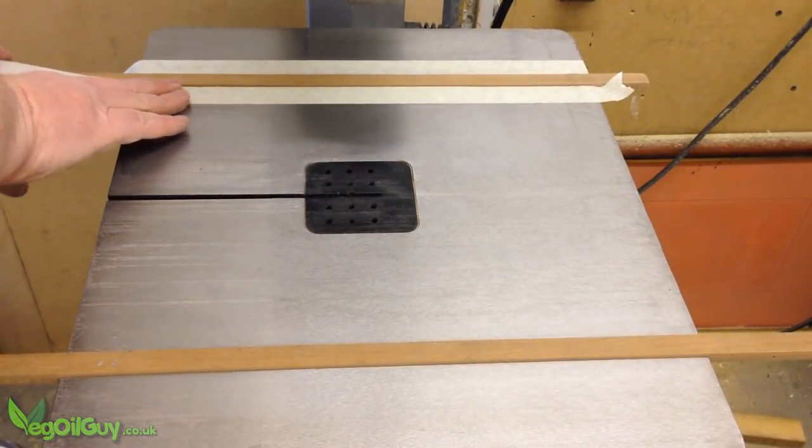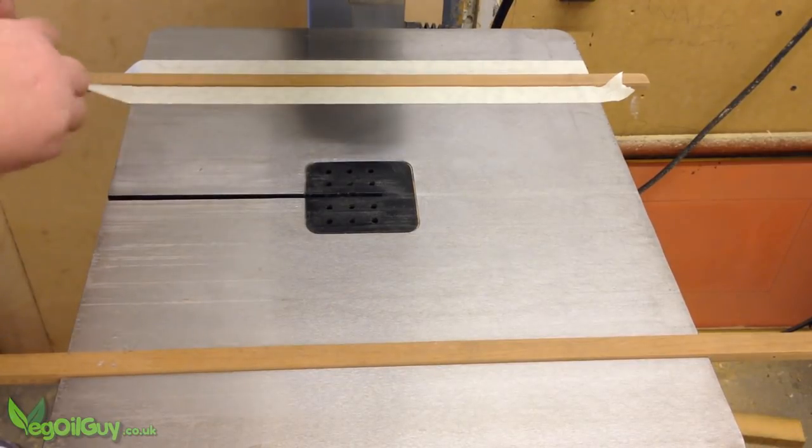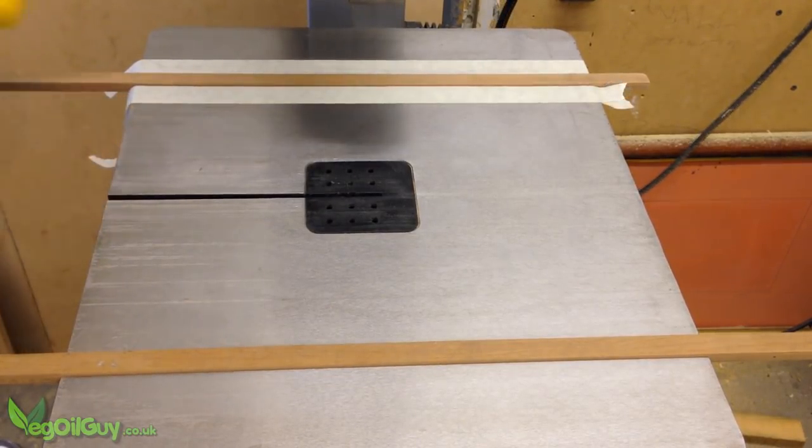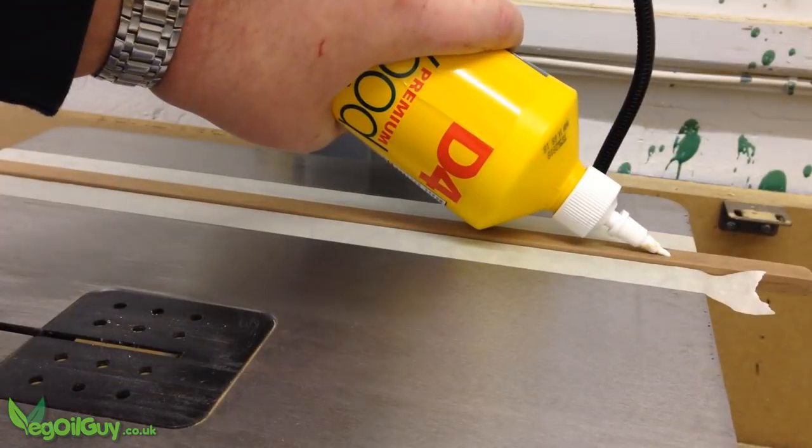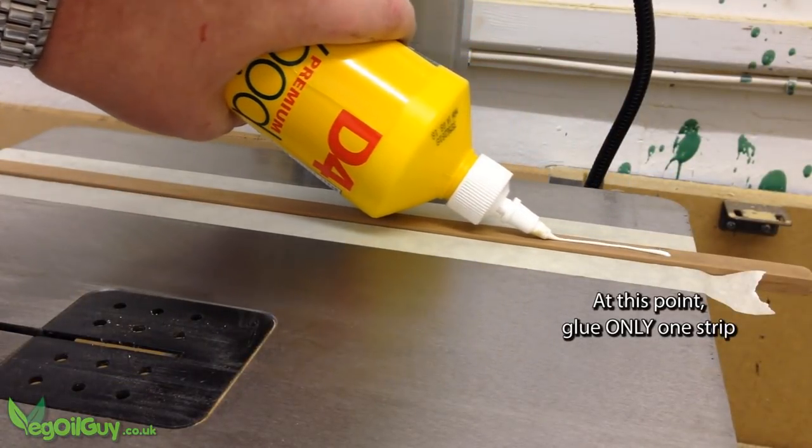Starting with the far track, I added a little masking tape to the face of the table. I then added a thin bead of glue on top of just the one strip.